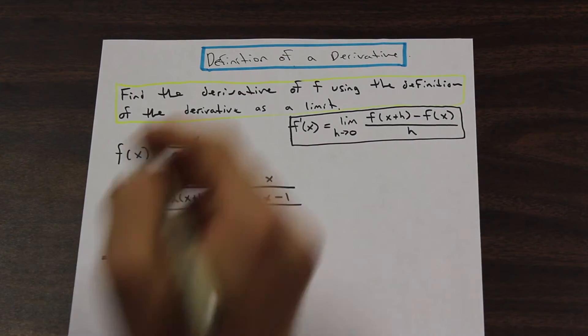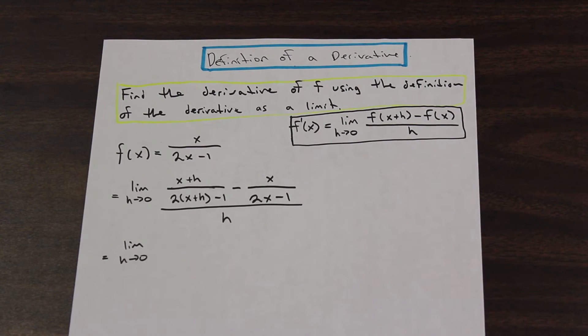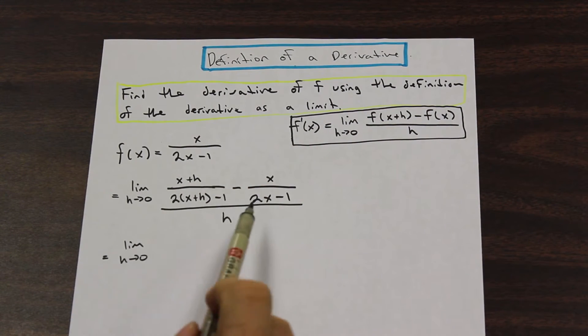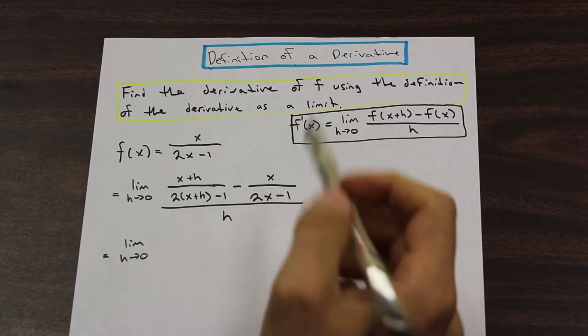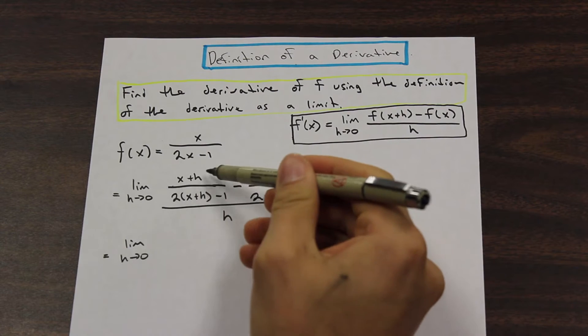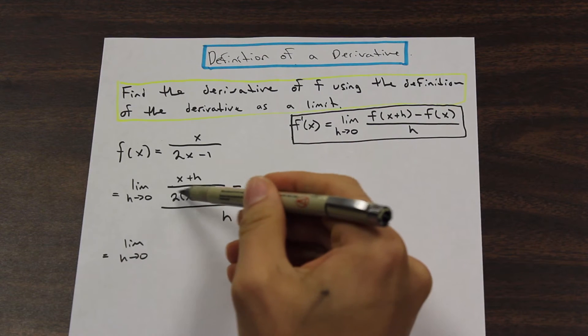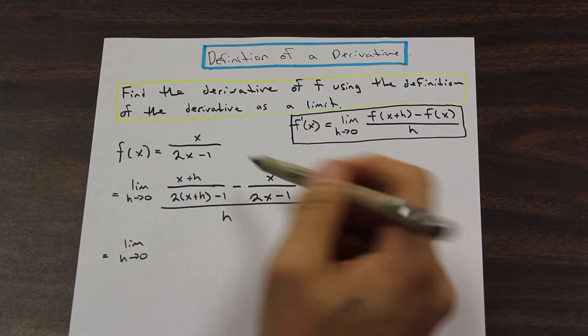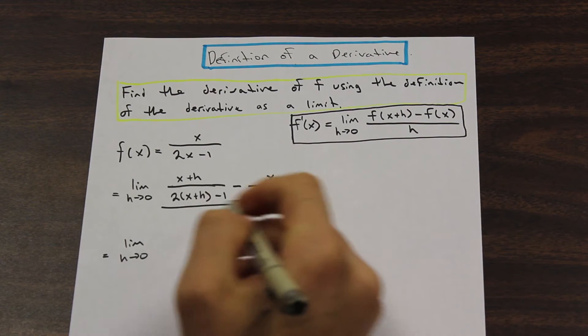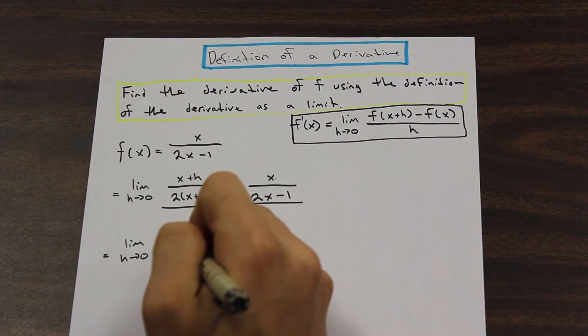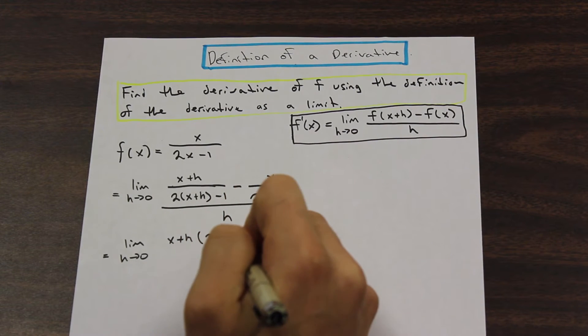And we need to clean this up a little bit. We need to get it into some kind of form that we can work with. And what we can notice immediately over here is that we can turn this into one fraction using a common denominator. So if we multiply this fraction top and bottom by 2x minus 1 and top and bottom here by 2(x+h) minus 1, we'll end up with one fraction instead of the difference between two of them on the top. Let's see if that helps.